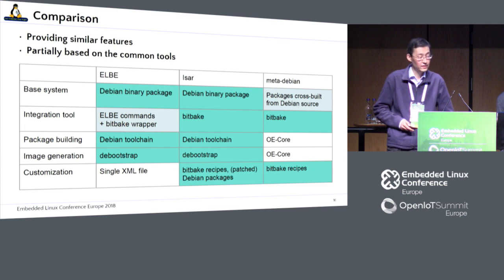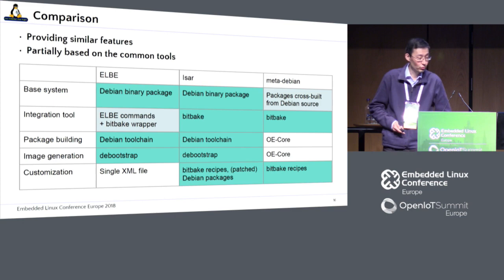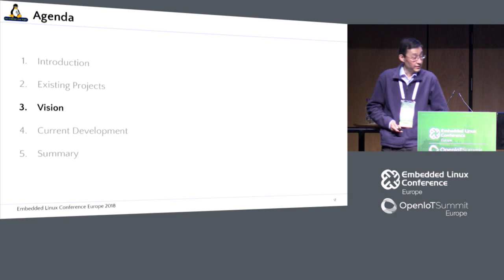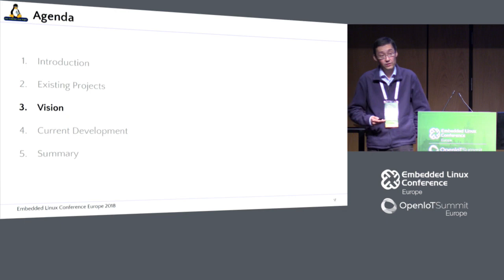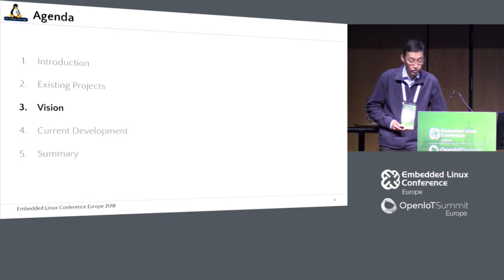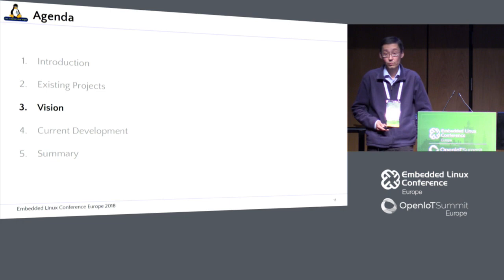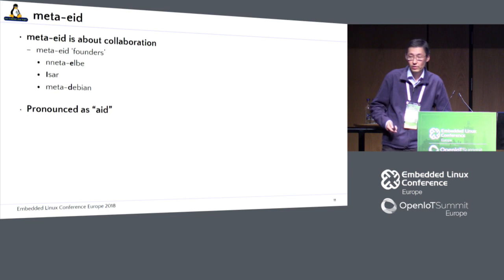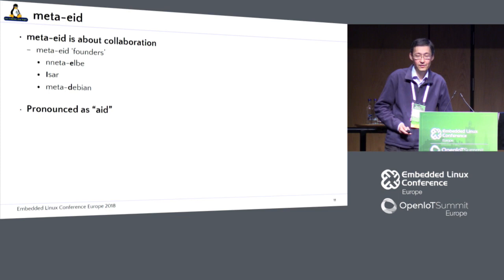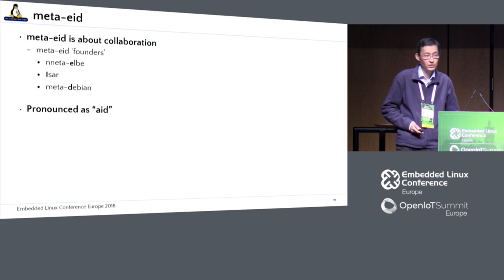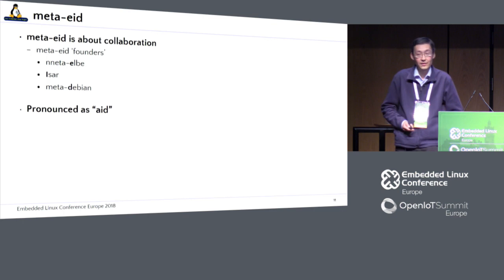The motivation to work on a next-generation build system is to reduce build times by reusing binaries and to reuse Debian packaging to avoid copying Debian rules into Yocto recipes. Here you have the comparison showing common features of each tool. Our goal is to reboot the whole thing and create a next-generation project with shared goals. For that we need to define those goals, and one obvious thing is to combine the first letters of our projects to form AED, which we pronounce as 'aid,' in the hope that it helps us and others.